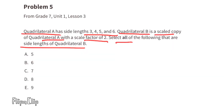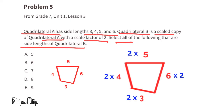Problem 5 (from unit 1 lesson 3): quadrilateral A has side lengths 3, 4, 5, and 6. Quadrilateral B is a scaled copy of quadrilateral A with a scale factor of 2. Select all side lengths of quadrilateral B. Multiply all side lengths of quadrilateral A by 2; the side lengths of quadrilateral B are 6, 8, 10, and 12.